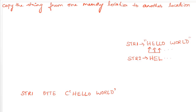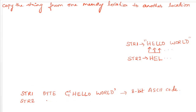For the variables, str1 is a byte character string already initialized as 'hello world' — the C prefix indicates the data should be stored as ASCII character bytes, each character occupying 8 bits. We also require str2 where we will create the copy. Its size should be the same as str1. Since we are not initializing it, we just reserve 11 bytes of memory for the destination string.